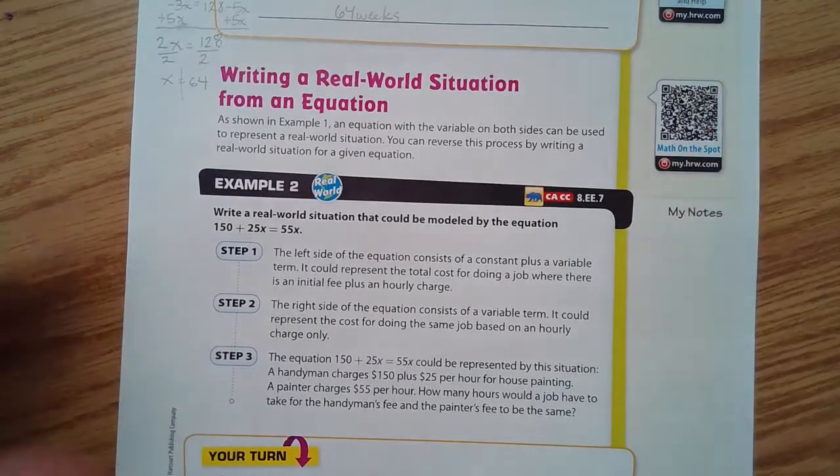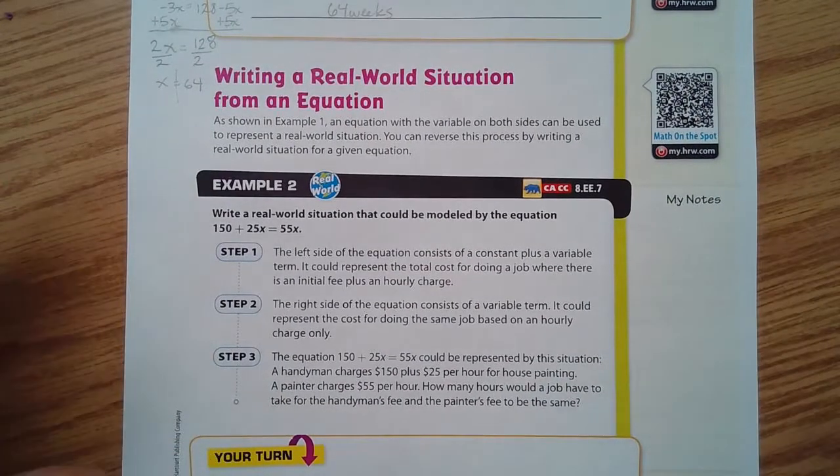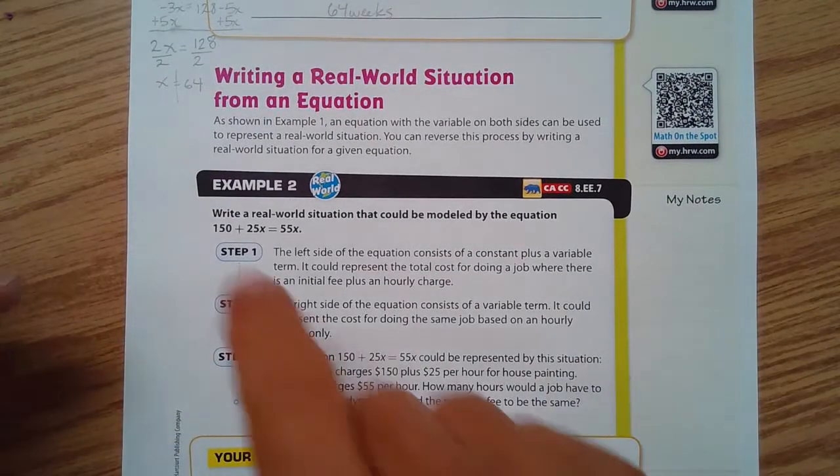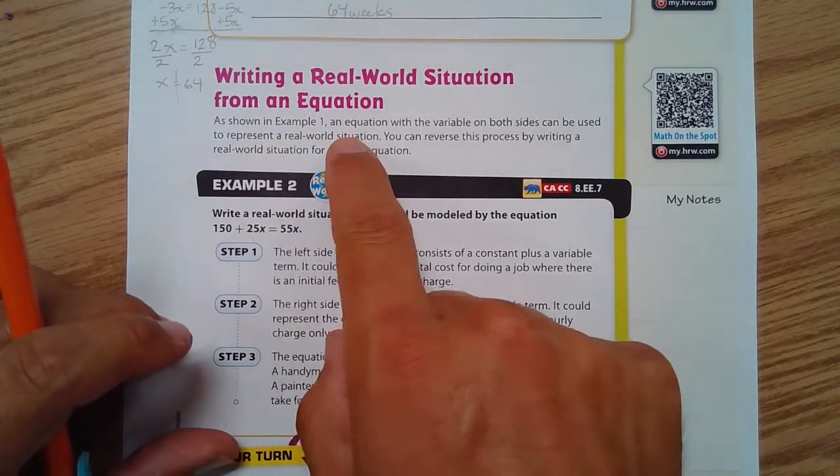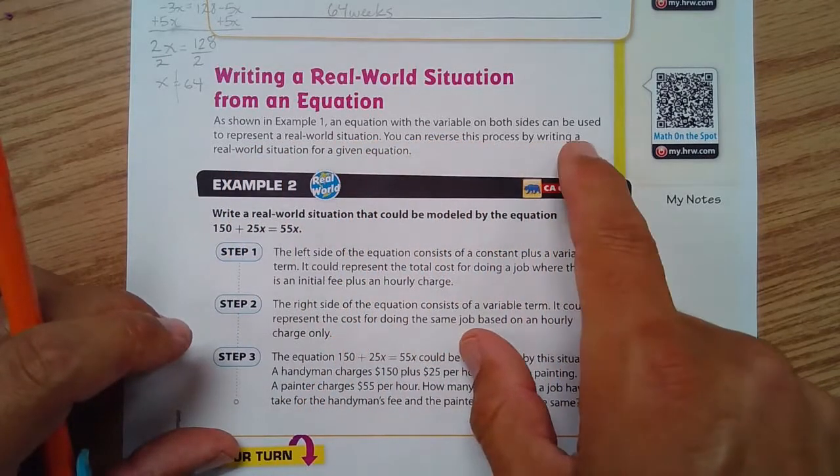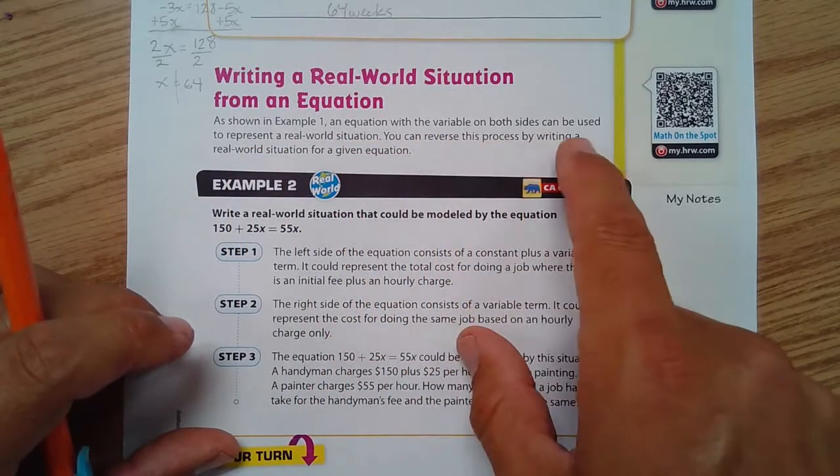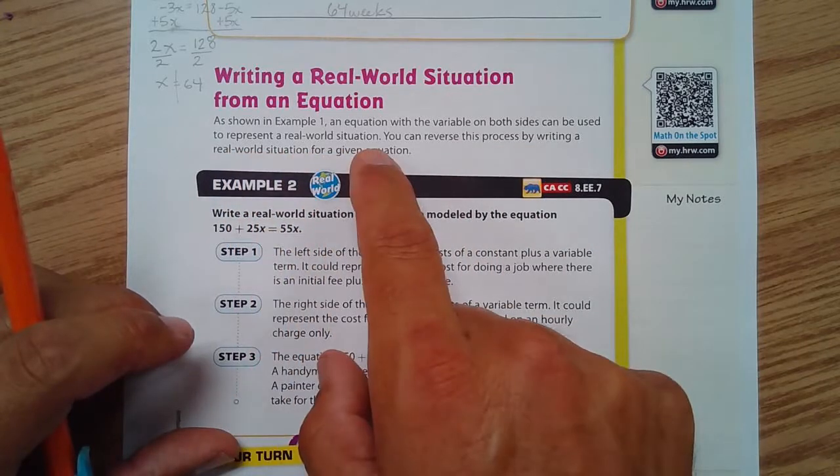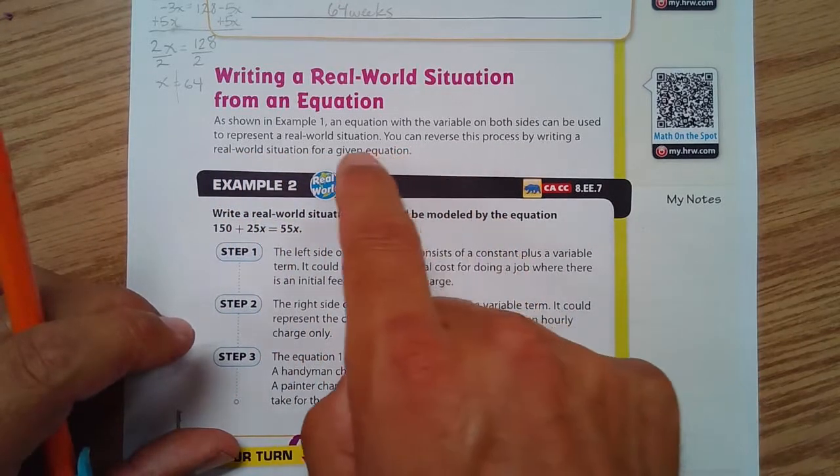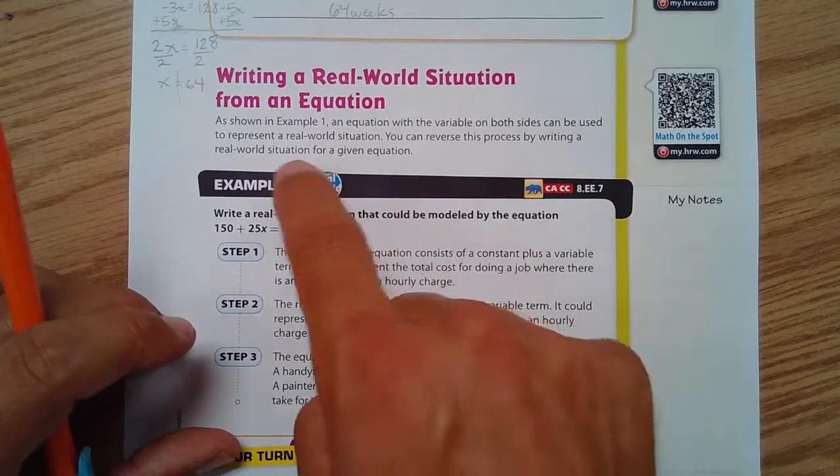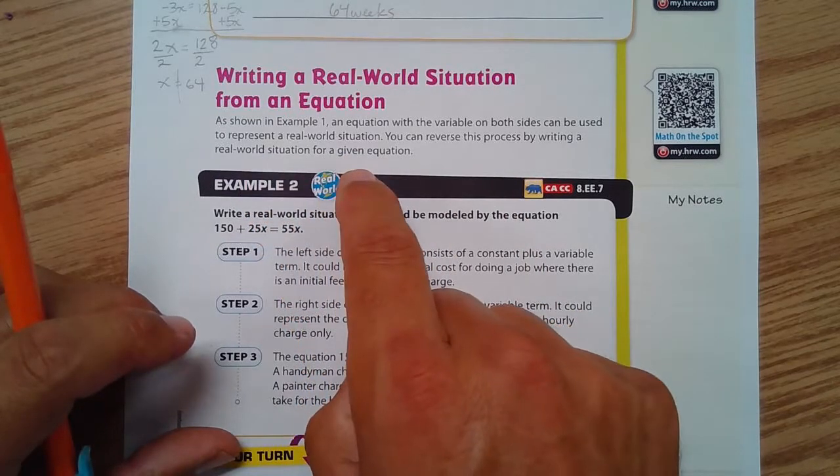Okay, you're gonna now go the other direction: write a real-world situation starting with an equation. An equation with variables on both sides can be used to represent a real-world situation. You can reverse this process by writing a real-world situation for a given equation.